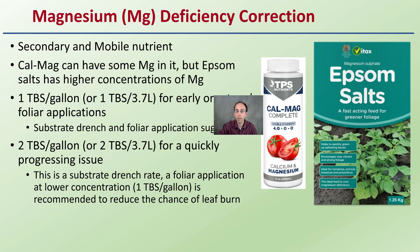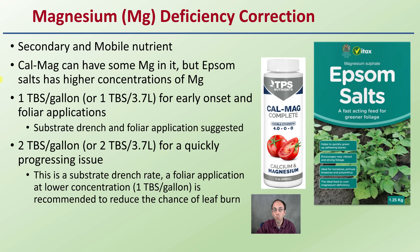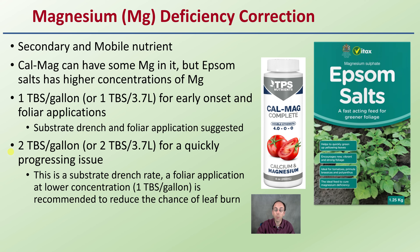To correct a magnesium deficiency — it is a secondary mobile nutrient. Cal-Mag has some magnesium, but Epsom salts have a higher concentration if you're really targeting magnesium. Use one tablespoon per gallon for early onset. For more advanced cases, both a substrate drench and foliar application are recommended. Two tablespoons per gallon as a substrate drench rate is reserved for the most severe cases only — applying that concentration to leaves risks burning. Don't go higher than that.